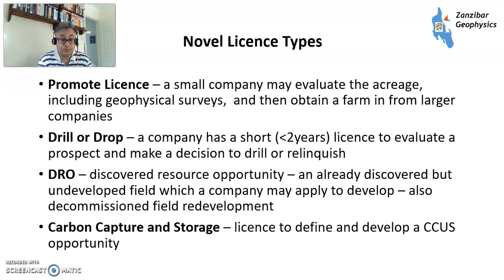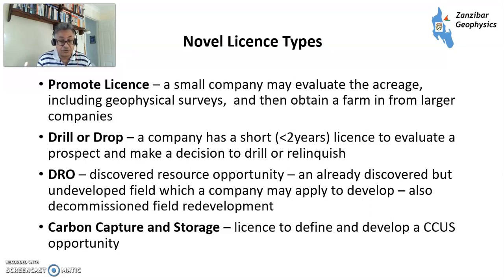There are also some novel licence types. First, there's a promote licence, where a small company that does not have the capability of drilling a well evaluates the acreage, may do geophysical surveys, and then tries to obtain a farm-in from a larger company capable of drilling — effectively acting as a promoter on behalf of the government. You can also have a short-term 'drill or drop' licence of less than two years, where a company evaluates the data and then decides to either drill the prospect or relinquish the licence. Then there are DROs — discovered resource opportunities — where a discovery already exists but has not been developed, and a company may apply to develop it. This is quite common in countries with PSAs, where the state oil company has made a discovery and wants someone else to come in and develop it with the risk and capital requirements.